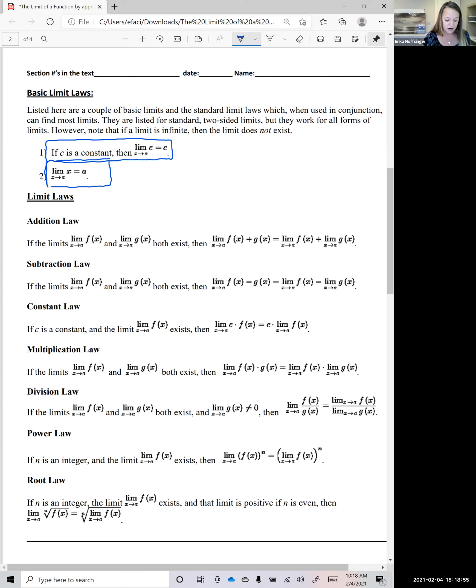And then we're taking the limit as X approaches A of the sum of those two functions. Then we can say this is the same thing as the limit of the first function plus the limit of the second function. So technically this is going to help us if we have a polynomial. Let's say you have X squared plus 2X plus 1, okay, that's a polynomial. You can break that down. X squared is a simple polynomial itself, 2X is also a polynomial and one is also a polynomial. So we can break it down and look at three separate limits and use our limit laws to help us.